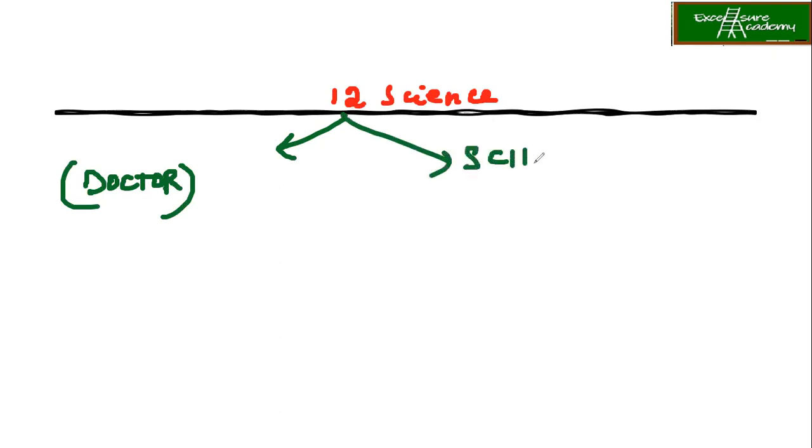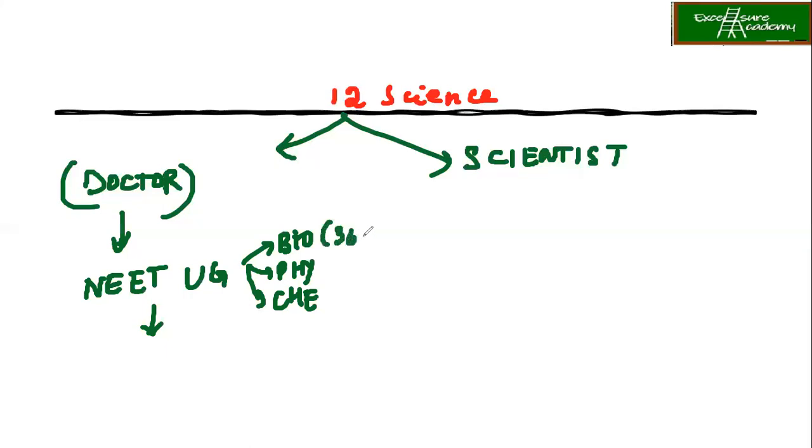So if you want to become a scientist, how and how many years it is going to take. Now, for becoming a doctor, you will have to prepare something called NEET-UG. So this is like an all entrance level exam for undergraduate. And once you clear this exam,